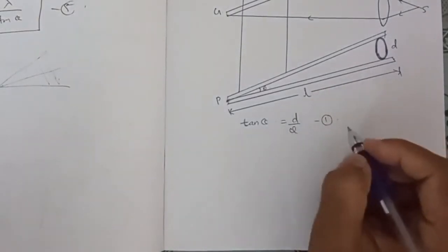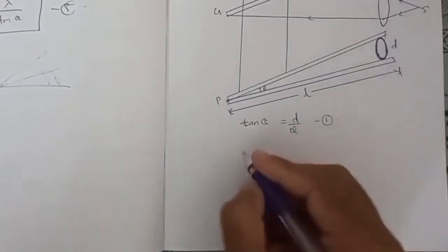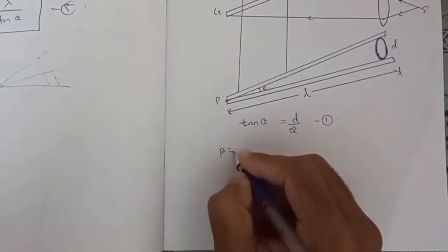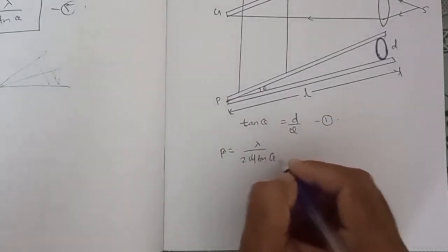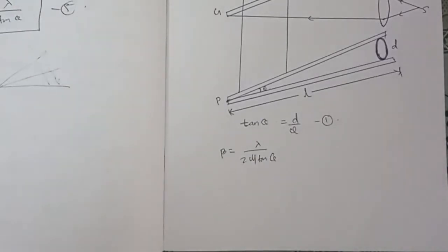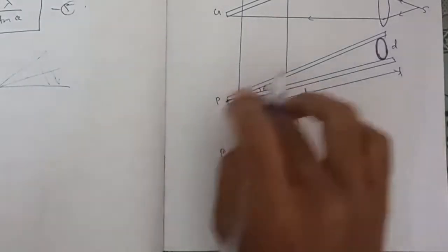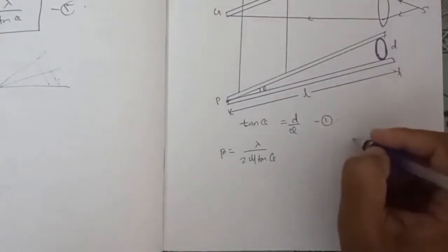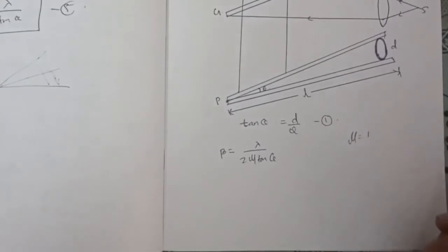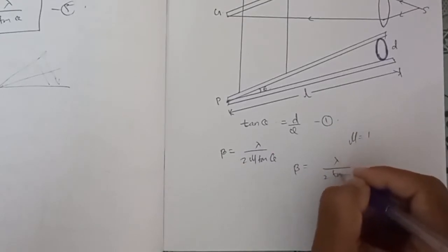Now, what is beta? Beta is equal to lambda by 2 mu tan theta. Since the liquid film is an air film, the mu value is equal to 1 — the refractive index is 1. Then beta is equal to lambda by 2 tan theta.